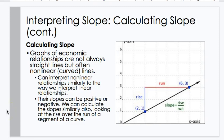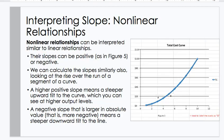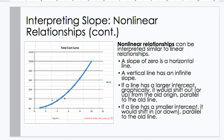Continuing. Graphs of economic relationships are not always straight lines, but often nonlinear, curved lines. Nonlinear relationships can interpret nonlinear relationships similarly to the way we interpret linear relationships. Their slopes can still be positive and negative, and we can calculate them between the two points, looking at the rise over run and the segment of the curve that we are focusing on. Nonlinear relationships can be interpreted similar to linear relationships. Their slopes can be positive, as in figure 5, or negative. We can calculate the slope similarly, also looking at rise over the run of a segment of a curve. A higher positive slope means a steeper upward tilt to the curve, which you can see at higher output levels. A negative slope that is larger in absolute value, that is, more negative, means a steeper downward tilt to the line.